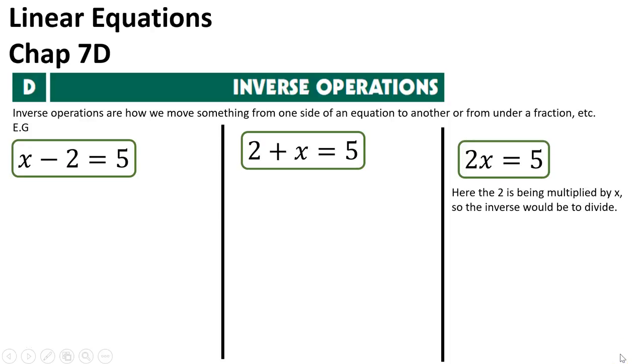So using a couple of different examples, if we look at this first one here, I've got x minus 2 equals 5. So I want to use an inverse operation to get x by itself. If I look at the minus 2 here, that's the thing I want to move.